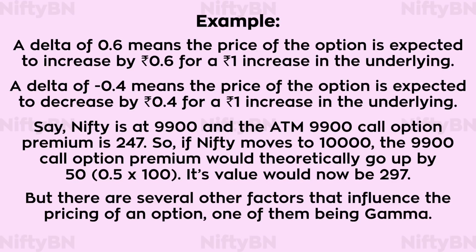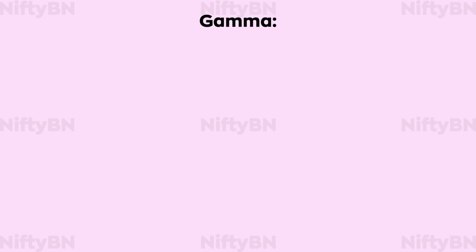Delta can also be used as an estimate for the probability of an option expiring in the money. So an option with a delta of 0.2 has a 20% probability of expiring in the money. Now, about Gamma.